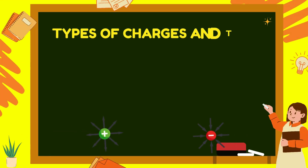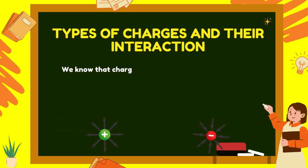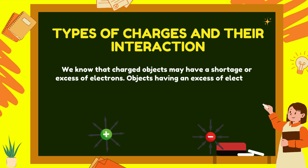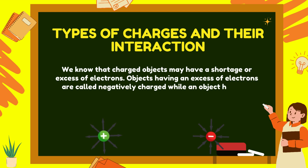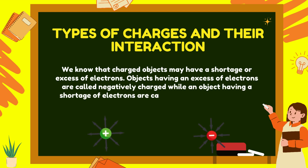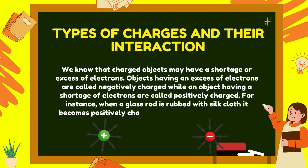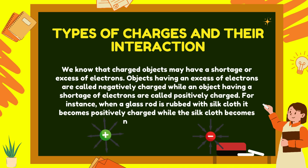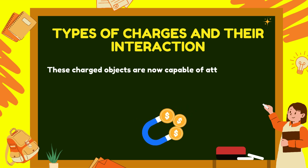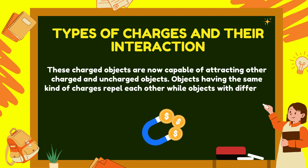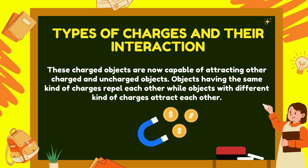Types of charges and their interaction: Objects having an excess of electrons are called negatively charged, while objects having a shortage of electrons are called positively charged. For instance, when a glass rod is rubbed with a silk cloth, it becomes positively charged while the silk cloth becomes negatively charged. These charged objects can attract other charged and uncharged objects. Objects having the same kind of charges repel each other, while objects with different kinds of charges attract each other.